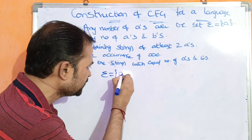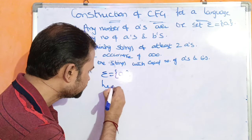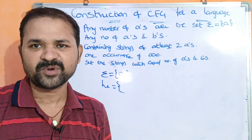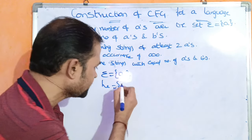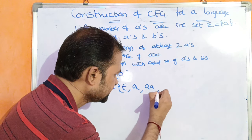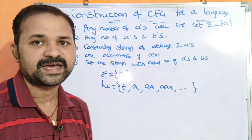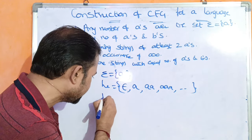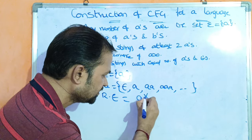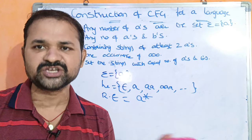The input alphabet is equal to A. Any number of A's means zero number of A's also. Zero number of A's means epsilon. One A, next two A's, next three A's, and so on. The regular expression for this language is A-star. A-star means any number of A's including zero number of A's.